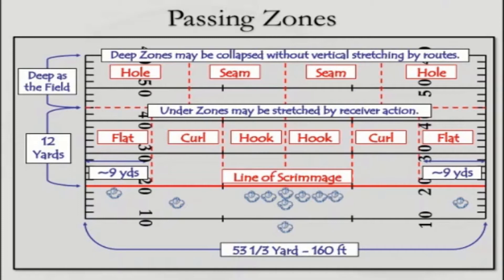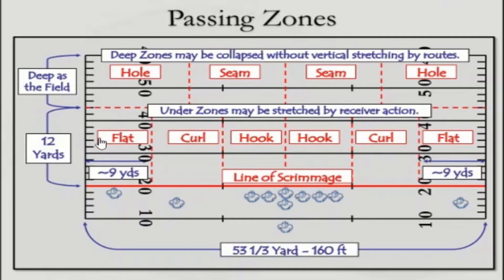On the screen you have a pretty decent diagram that gives the names of the particular areas on the field. You have your tackle box, and a little bit outside of that you have your hook area, which extends 12 yards past the line of scrimmage. As you extend out you have the curl area, which extends to just outside the numbers, and then your flat area from that line out to the sidelines. Further out you can see the two seam areas.